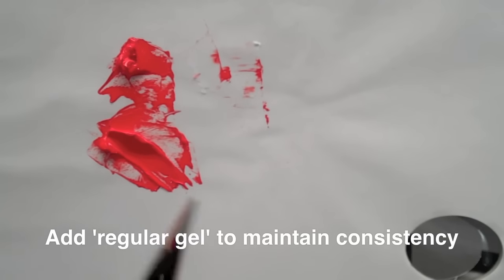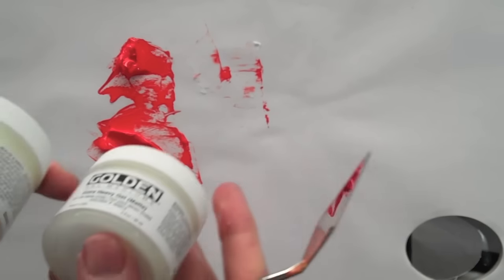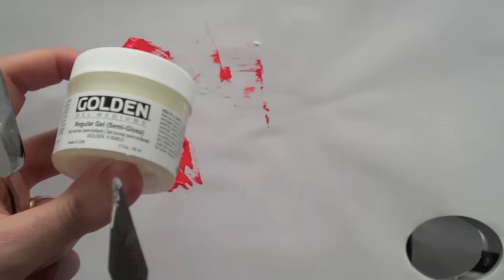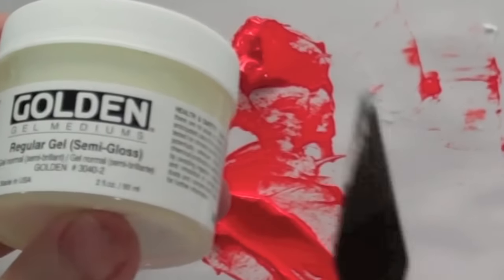So if you want the paint to go further but still keep this consistency, you can just add regular gel to it. And the thing that you'll notice when you look at a label on the gel is it said regular gel and then in brackets it was semi-gloss.